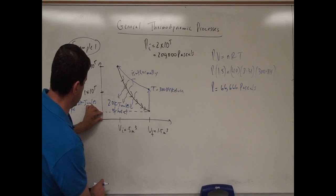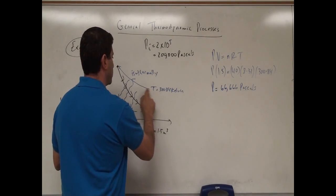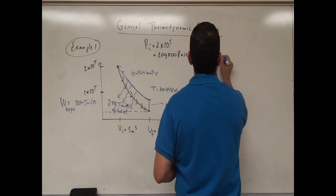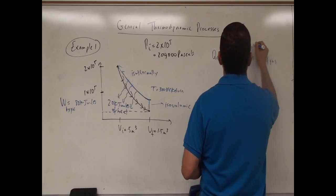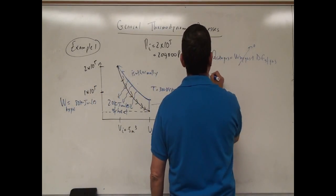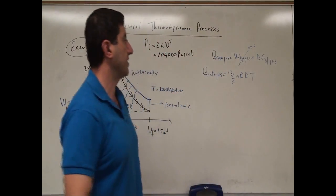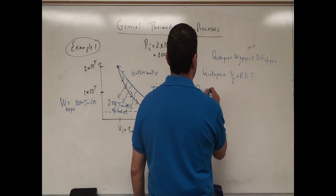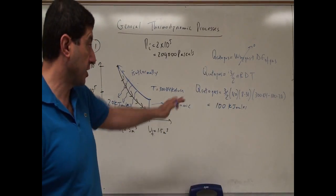On the diagram, if 22,000 corresponds to roughly here, then 44,000 and 66,000 would be proportionally higher. For the isovolumic process, the work done by the gas is zero, so Q into gas equals the change in internal energy, which is (3/2)NR ΔT. The temperature goes from 100.28 K up to 300.84 K, and calculating this gives 100 kilojoules of heat coming in.